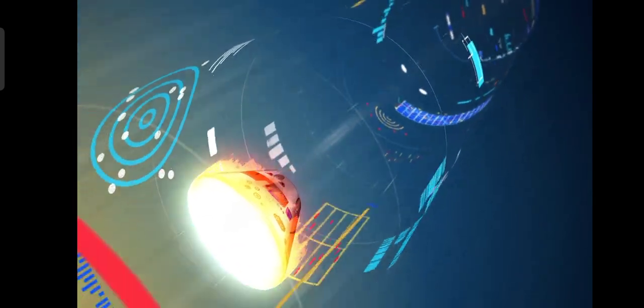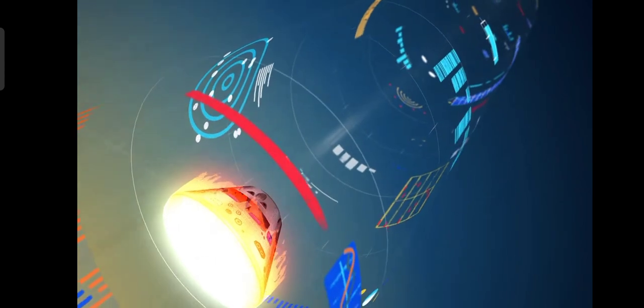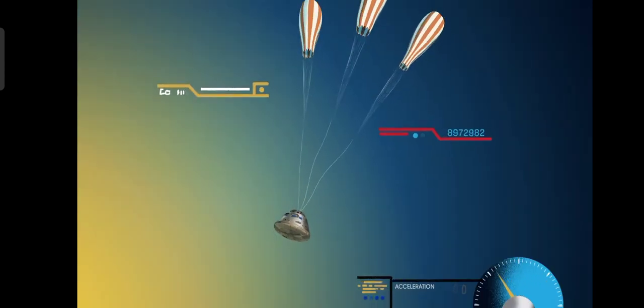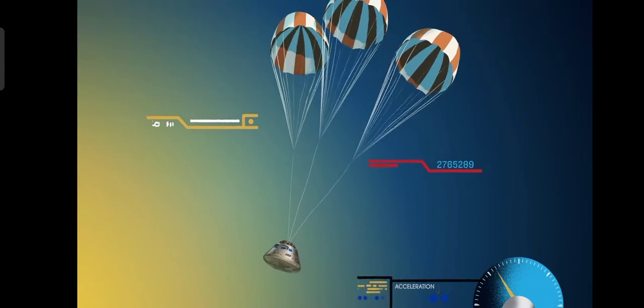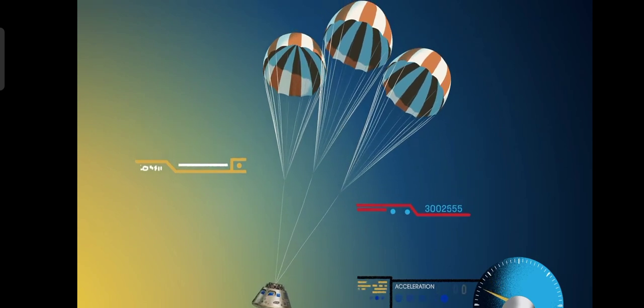With the Orion now at just 300 miles per hour, a series of parachutes uniquely tested and produced for this moment deploy, decelerating the craft to just 20 miles per hour for splashdown.